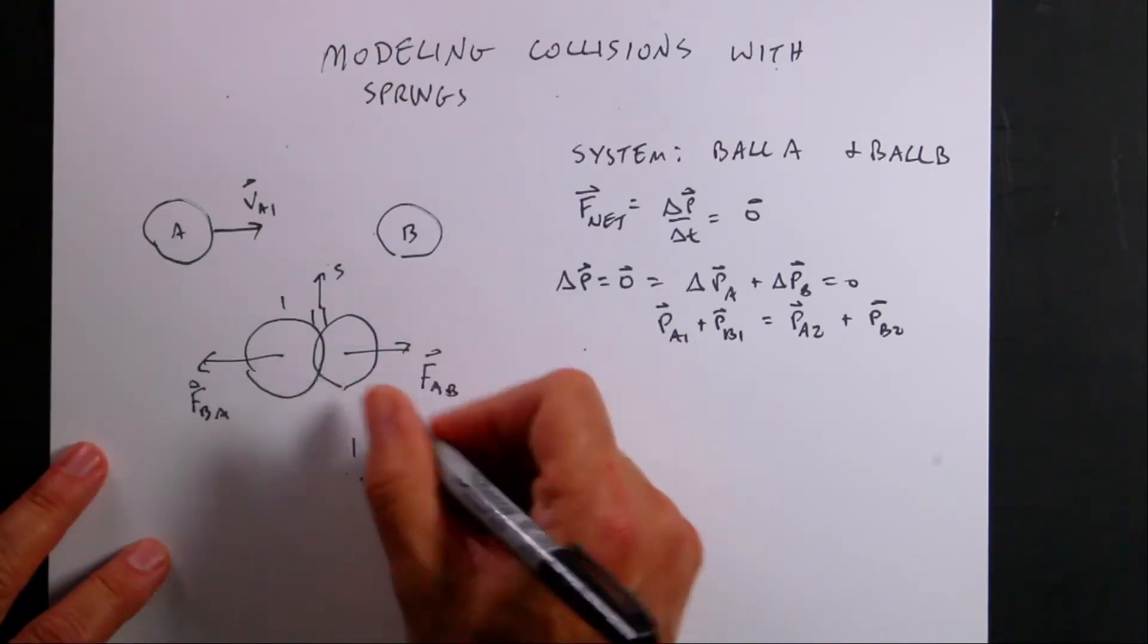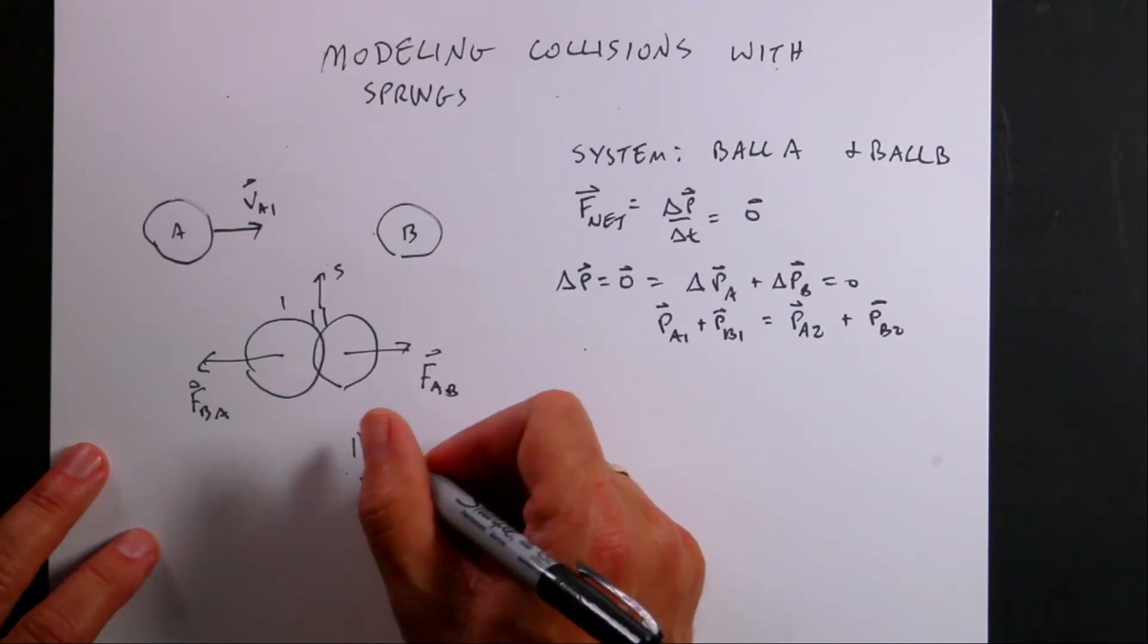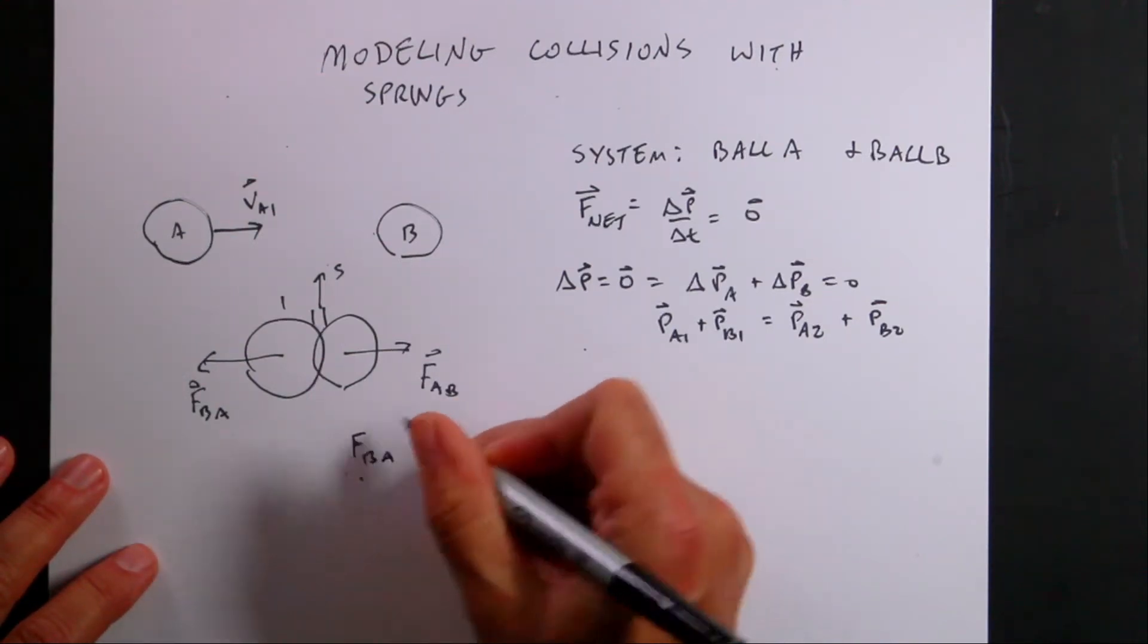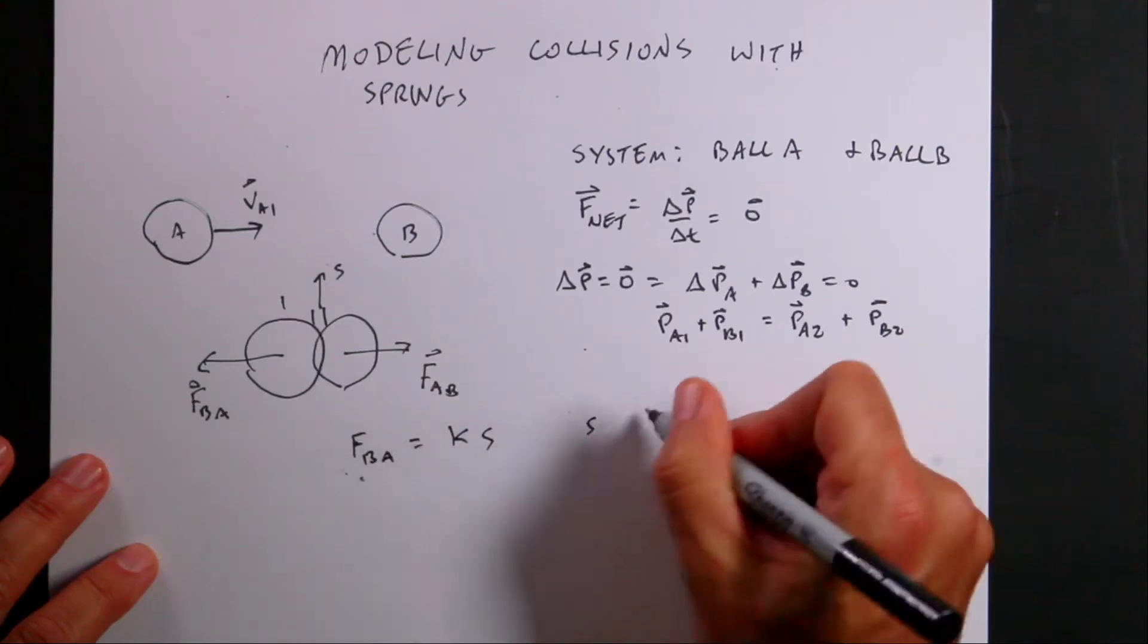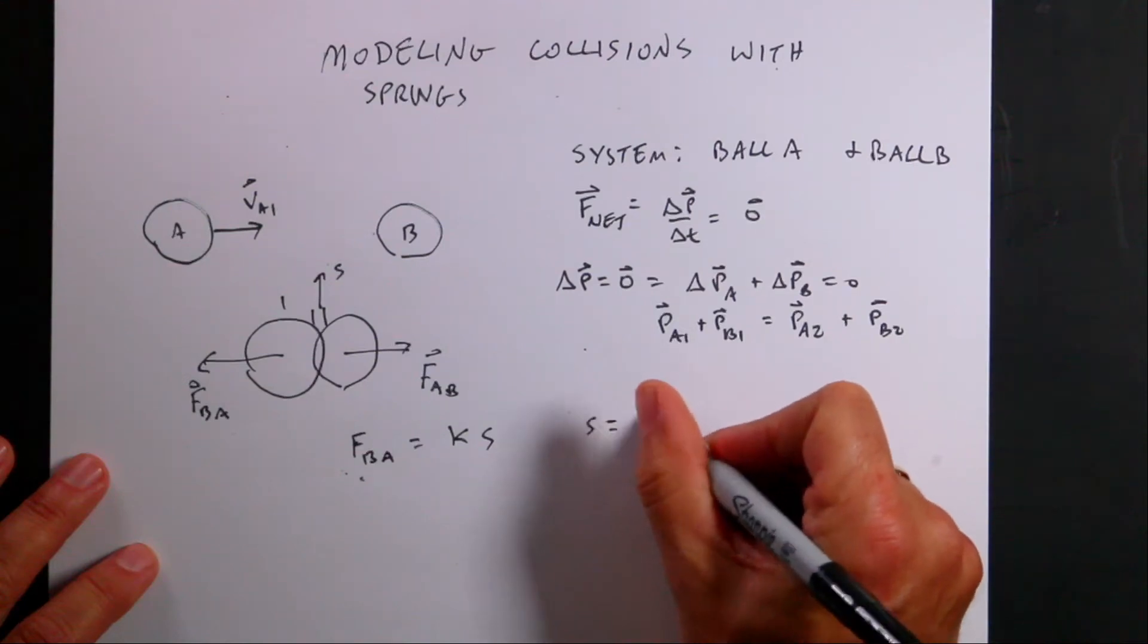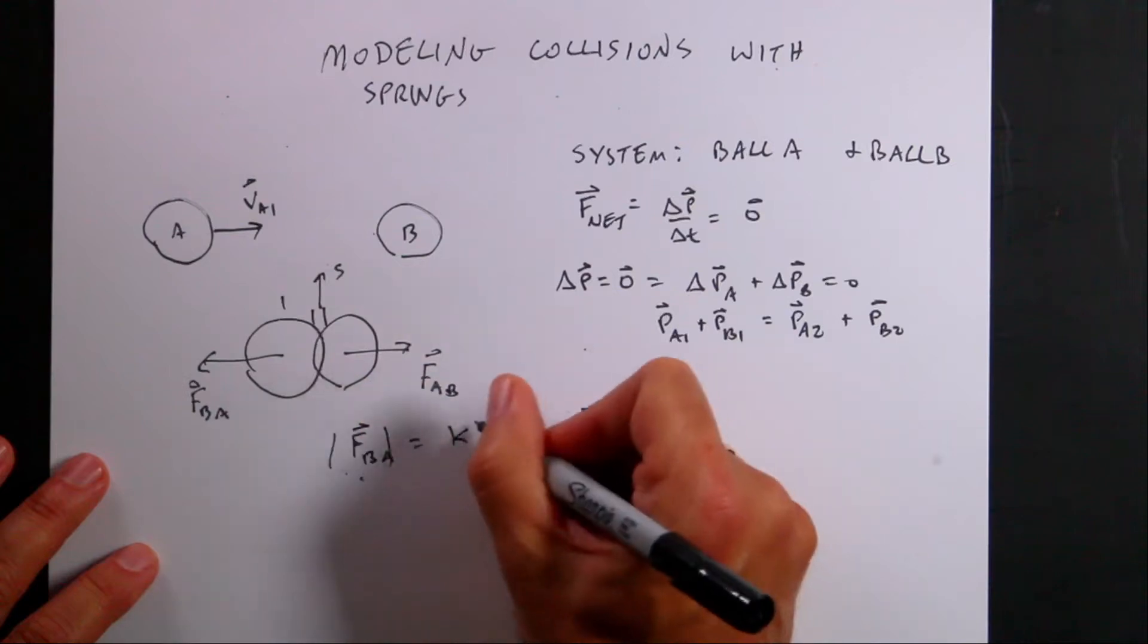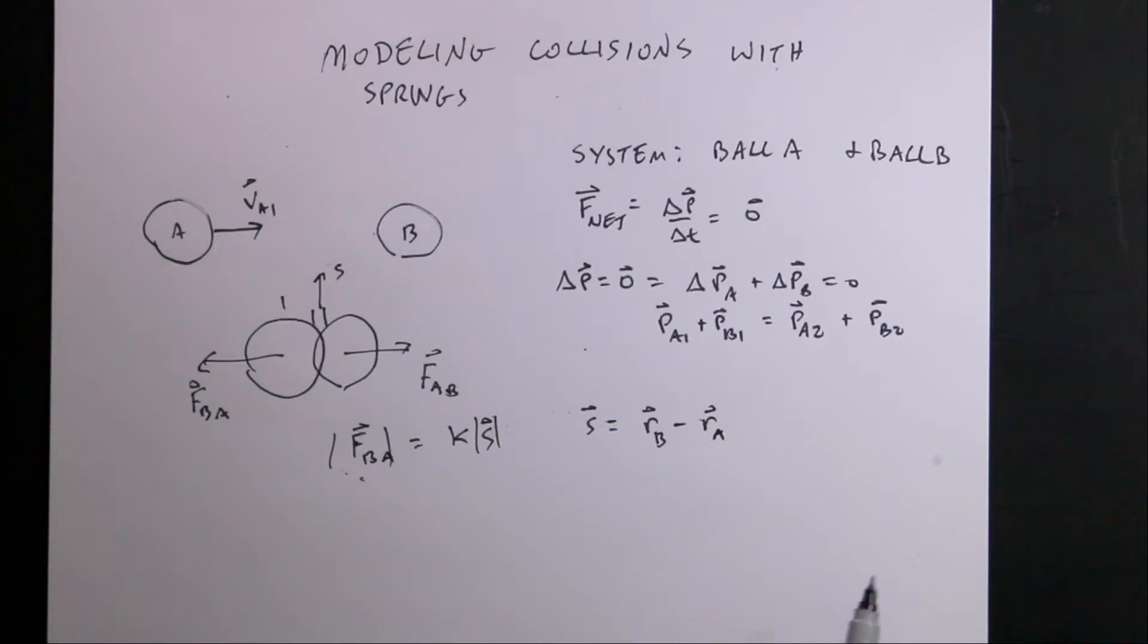So let's just say, and actually I won't even do the overlap. I'm just going to do the distance between them. So I'm going to say if they overlap, then the force pushing them apart FBA, the magnitude, is going to be equal to some spring constant times S, where S is equal to RB minus RA. It's the difference between them. So here's what we're going to do.